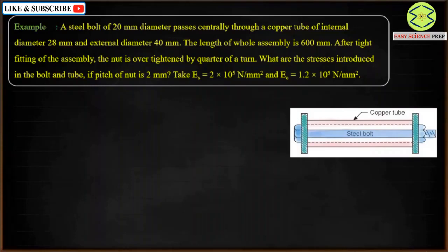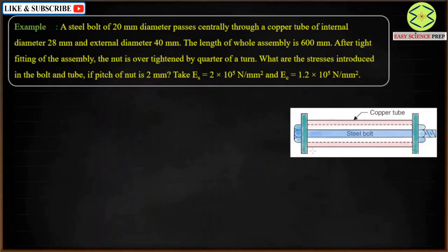Let's solve the next example. This problem is based on composite bars. A steel bolt of 20 mm diameter passes centrally through a copper tube of internal diameter 28 mm and external diameter 40 mm. They have given the diagram to us — we have a copper tube with a steel bolt inside. The length of the whole assembly is given as 600 mm.